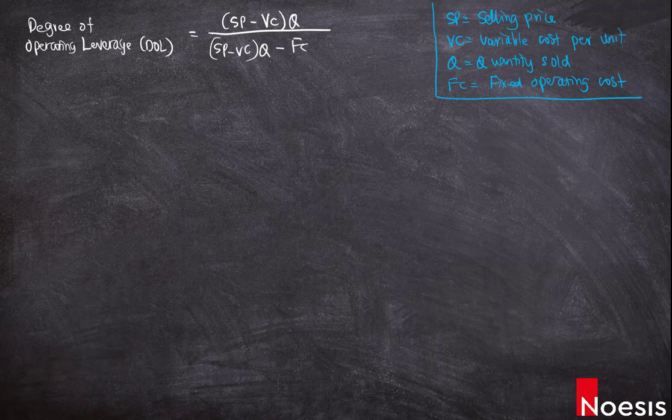The degree of operating leverage, or DOL, measures the percentage change in the company's operating income given a percentage change in the number of units sold. The formula for DOL equals contribution divided by the company's operating income.